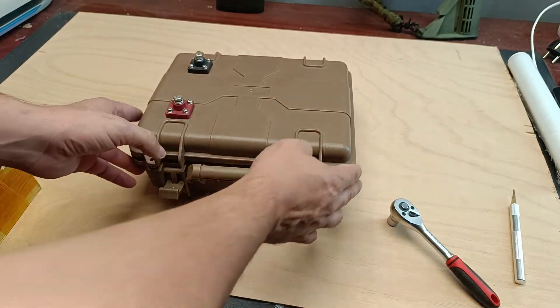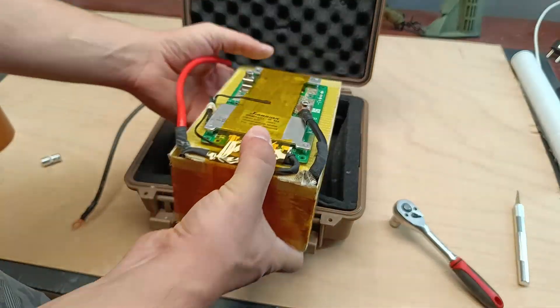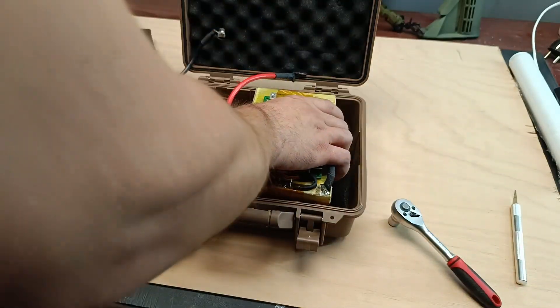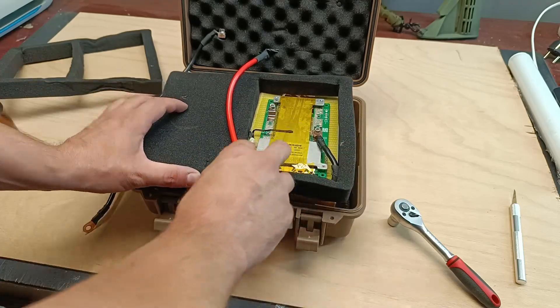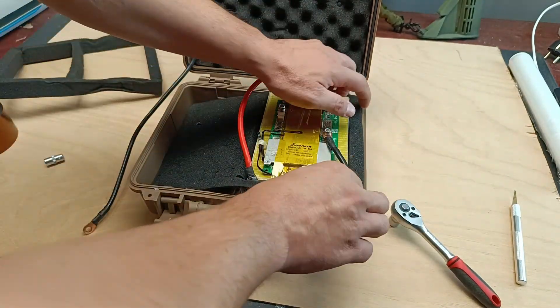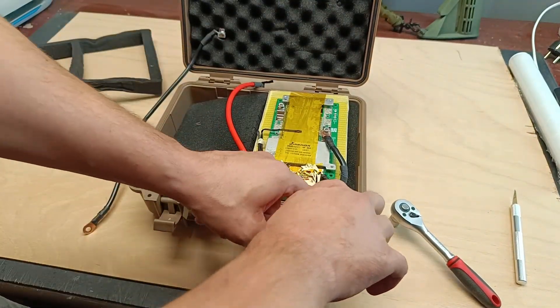Once we've assembled the battery and connected the BMS, we can move on to testing. We'll check the voltage and then measure the current to ensure everything is working properly. The Geobyta BMS provides all the necessary information and continuously monitors the battery's condition. With all protective functions active, the battery is ready for safe long-term use.